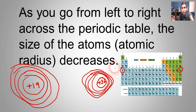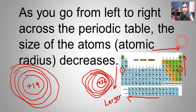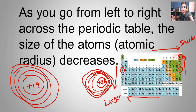So looking at the trend: as you go down, atoms are larger; as you go to the left, they're also larger. As you go to the right and toward the top, those atoms get smaller — they have smaller atomic radii. So you can probably guess what is the smallest atom on the periodic table. If you guessed helium, that's correct — top right. And the largest atoms would be down here: cesium, francium — those would be the largest atoms on the table.